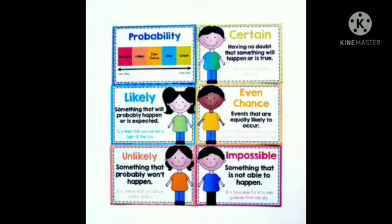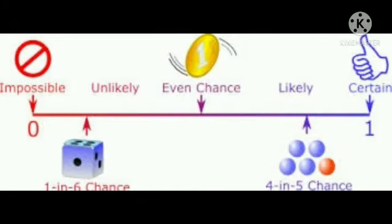If an event is possible but probably won't happen, the outcome is unlikely. The results of a probability experiment range from zero to one, meaning it describes how likely it is that an event will happen. A zero means it can never happen, while one means it is sure to happen.